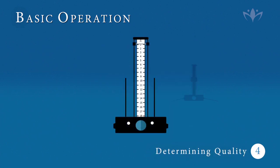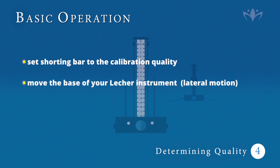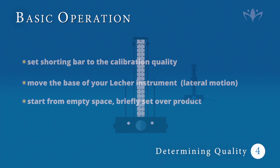Four, performing qualitative assessment. Set the shorting bar to the calibration of the energetic quality you wish to detect and proceed to move the base of your Lecher instrument in a lateral motion, starting from empty space to briefly settling over the product you are testing.